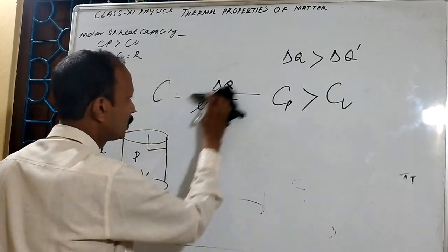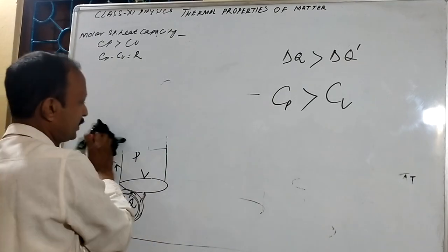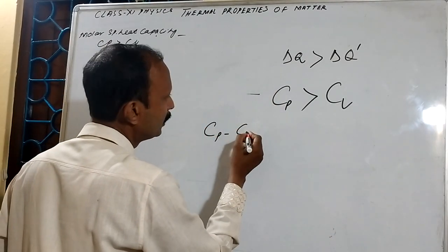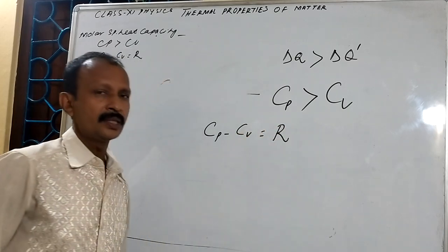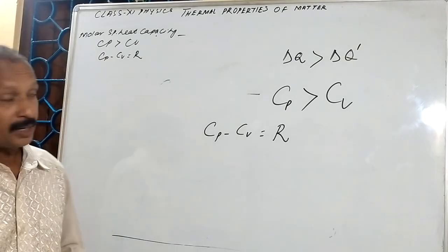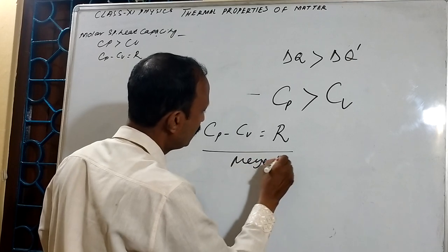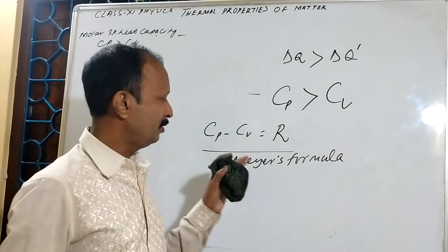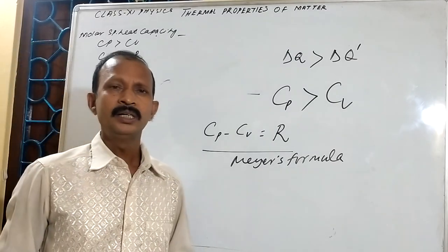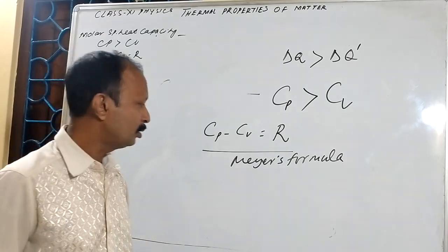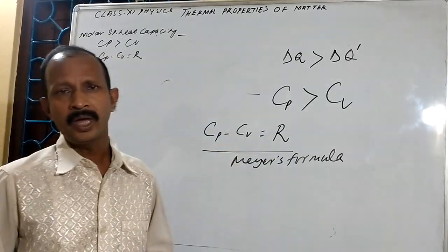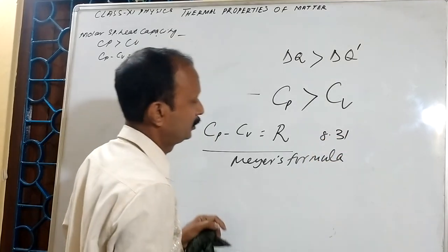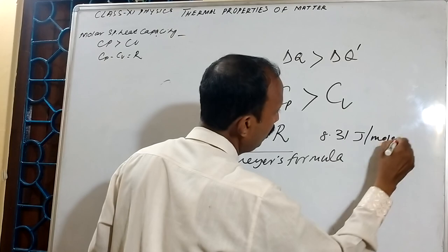Between these two terms there is a beautiful relation we study in thermodynamics. That relation is Cp minus Cv is equal to R. This R is called the ideal gas constant. This formula is called Mayer's formula. The value of R is 8.31 joule per mole per Kelvin.